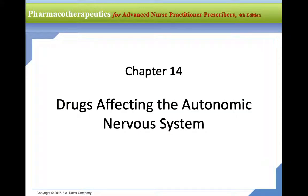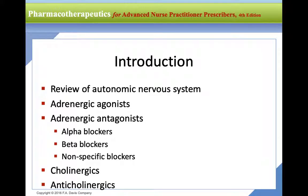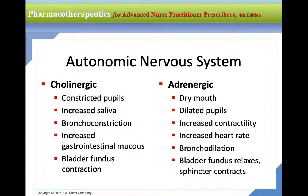Today we're going to talk about drugs that affect the autonomic nervous system. We'll cover adrenergic agonists, a few antagonists, and alpha blockers. Beta blockers have been moved to the cardiovascular section since their primary use is hypertension, post-MI, and other cardiovascular disorders. We'll also cover cholinergics, anticholinergics, and anticonvulsants in this section.